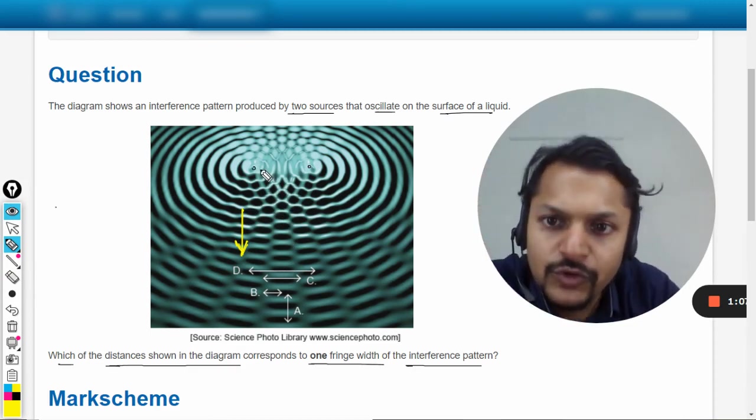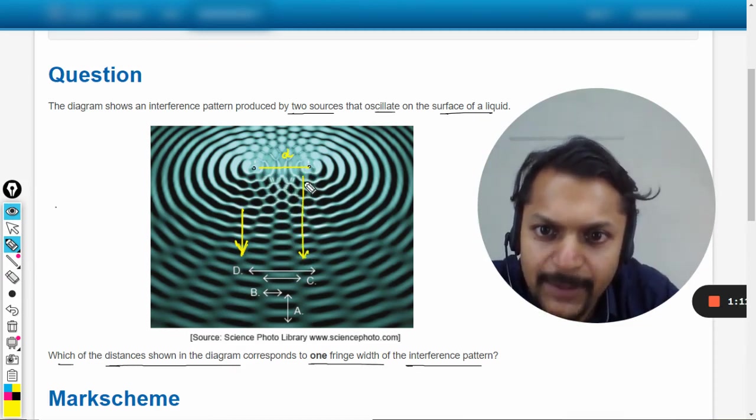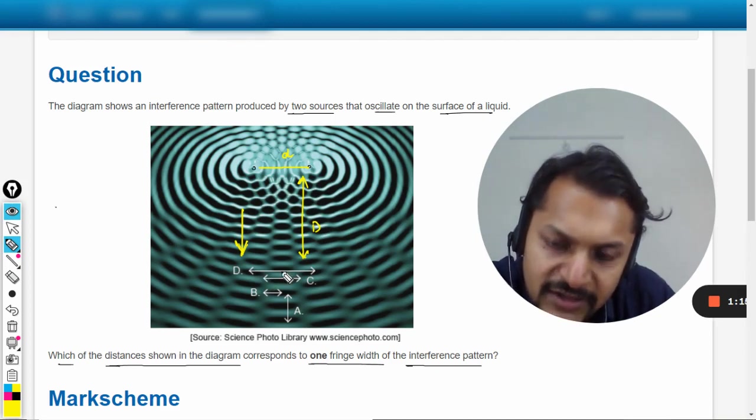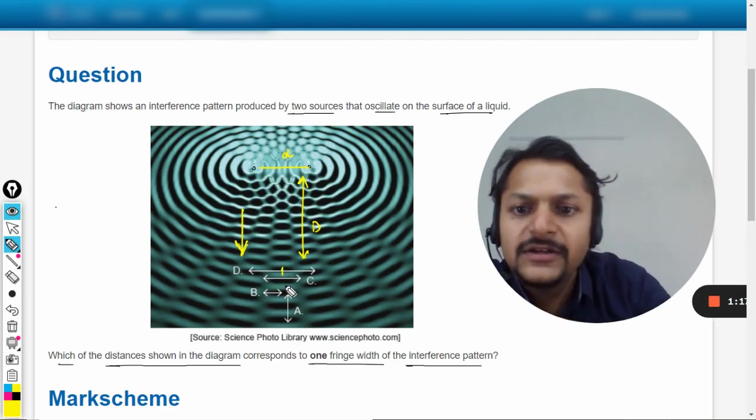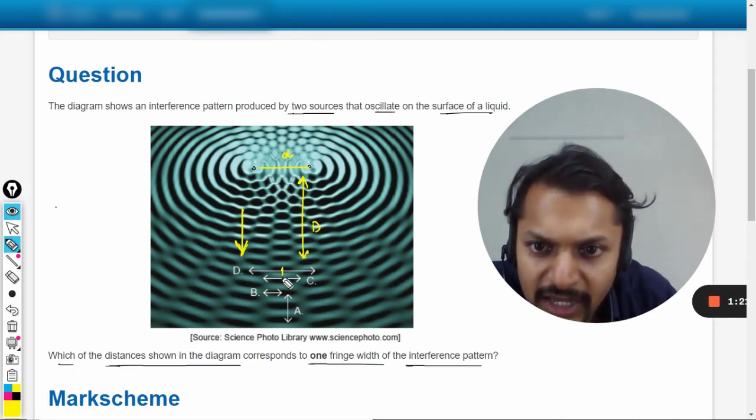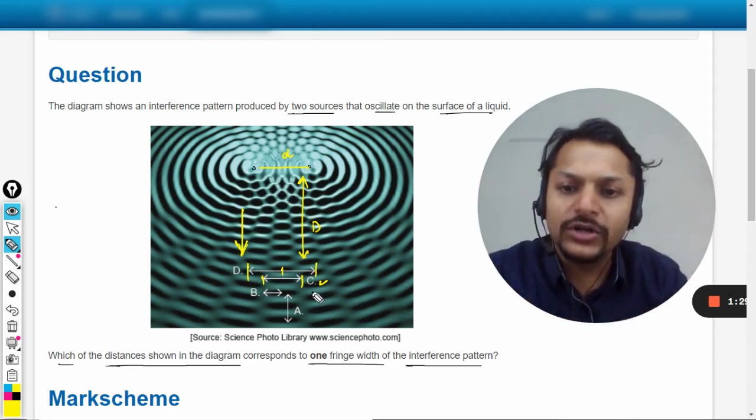So this will be capital D. This distance will be small d, this distance will be capital D - the distance between the screen and the slits. And this will be the central bright fringe. C will be the fringe width.